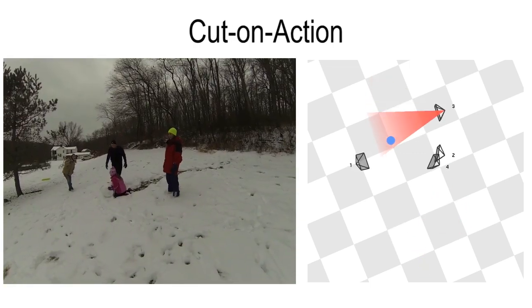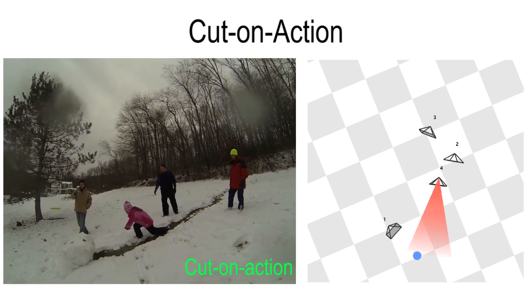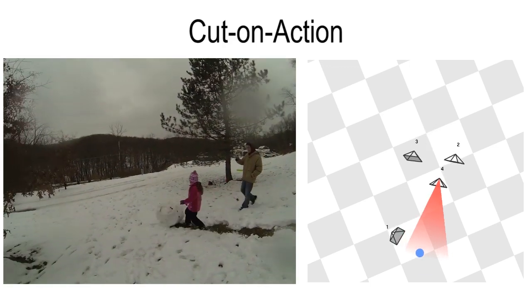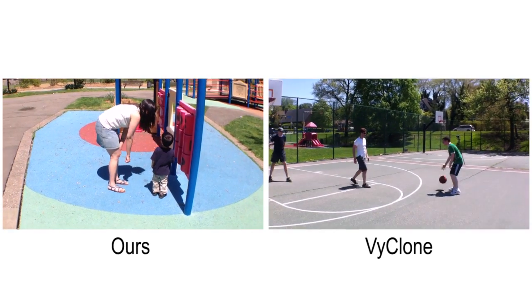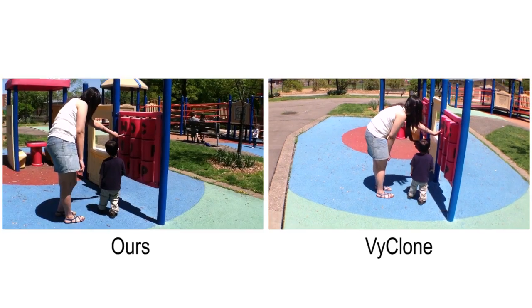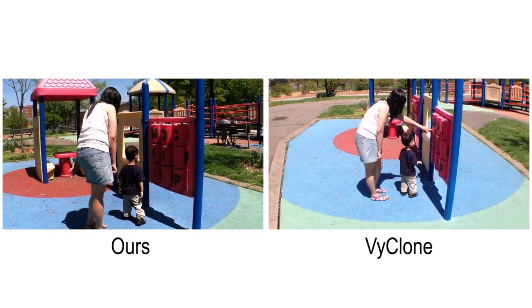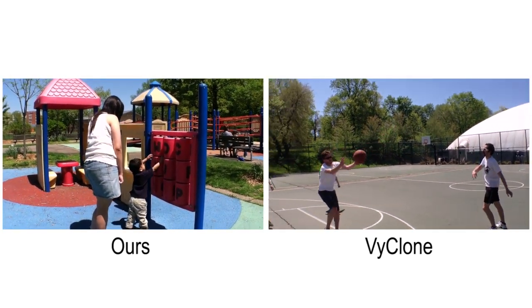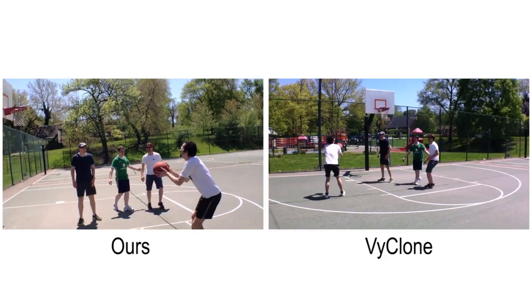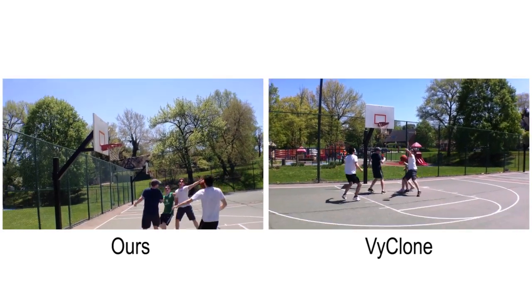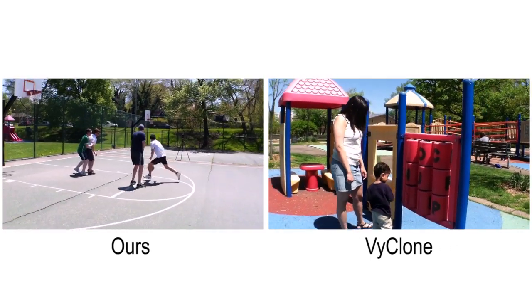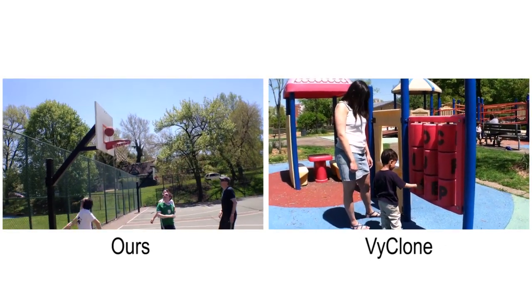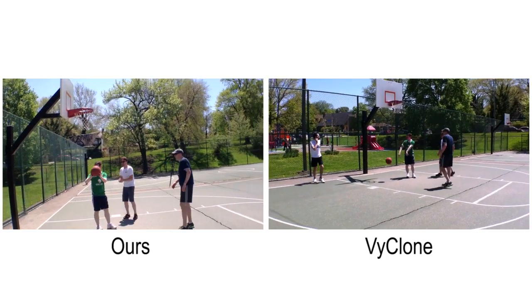The cut-on-action condition produces the impression of continuity by cutting between cameras at moments of activity. In this example, there are two distinct activities occurring within the same area. In one subgroup, a few friends are playing basketball, and just outside the court, a woman is entertaining a child. Vyclone, a commercial software, appears to cut randomly between the two storylines. In contrast, our method correctly separates the two activities and shows them in succession, producing a more coherent result.